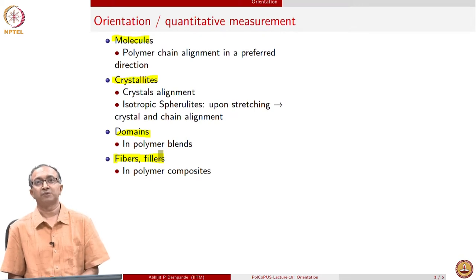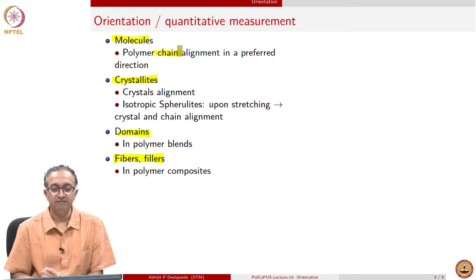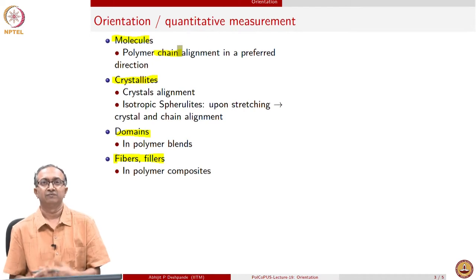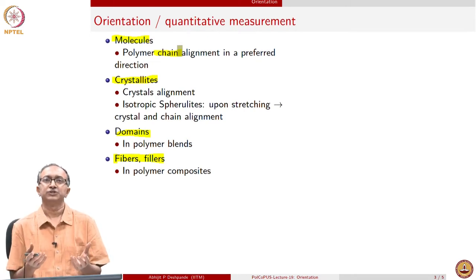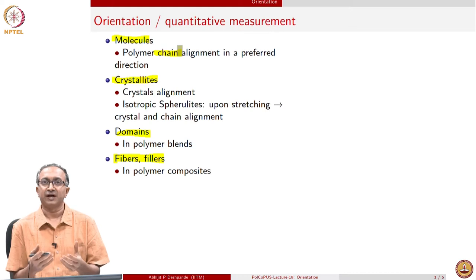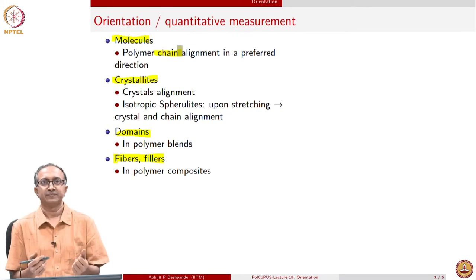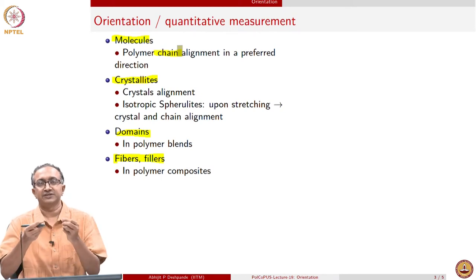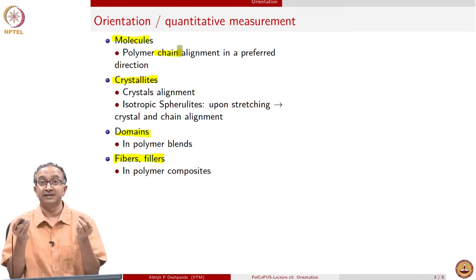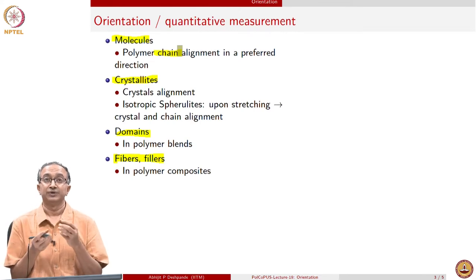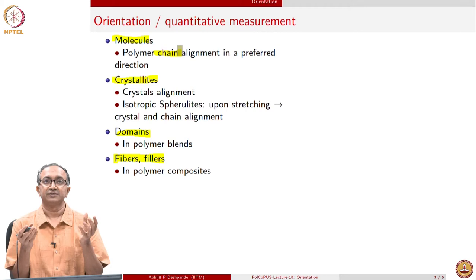When we speak of orientation in polymeric materials, it can be of all these different things. In the case of a macromolecule, it is the chain itself which is aligning in a preferred direction. Can you think of if you have experienced the alignment of chains during day-to-day use of polymers? When you take a grocery bag or any plastic film and start stretching it, initially it stretches easily. As you stretch more and more, it becomes more difficult, and then it will also not spring back. In such cases, polymer molecular chains are getting aligned.